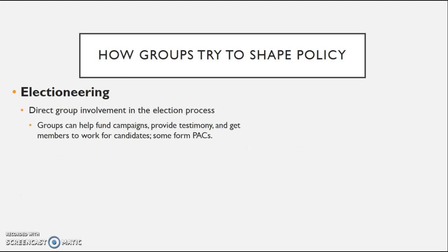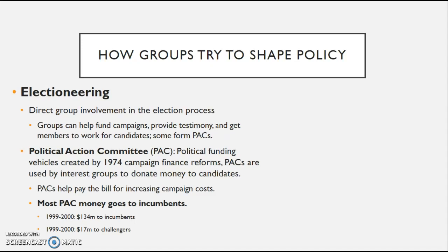Interest groups engage in electioneering and are very much involved in the election process — whether that's donating money in the form of a PAC, providing testimony on behalf of a candidate, or getting members to vote for candidates. Political action committees are the political funding vehicle of an interest group, allowing them to funnel money to candidates legally. Most money is going to be going towards incumbents, because they have such an overwhelming re-election advantage — the gap between money going to incumbents versus their challengers is very wide.